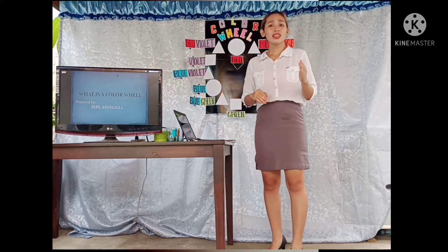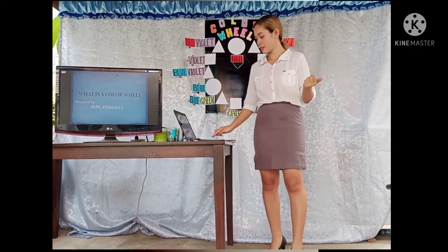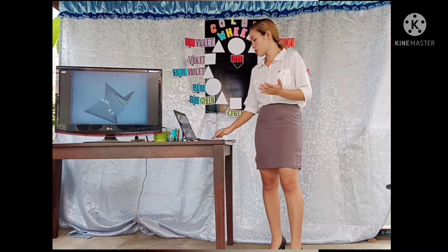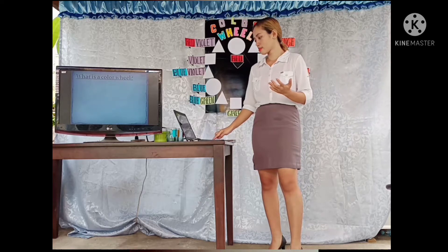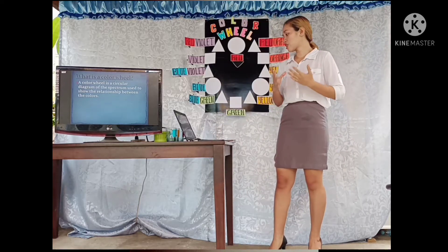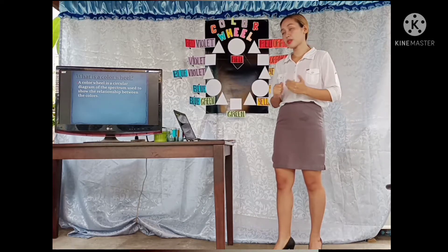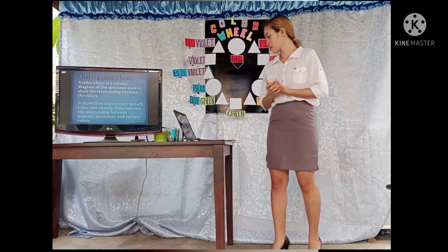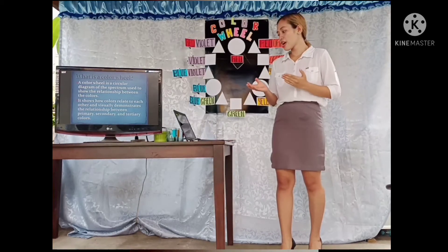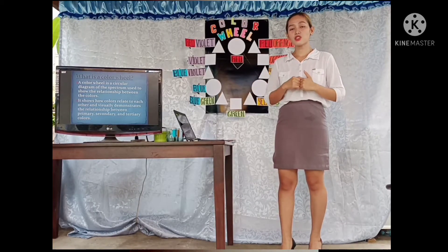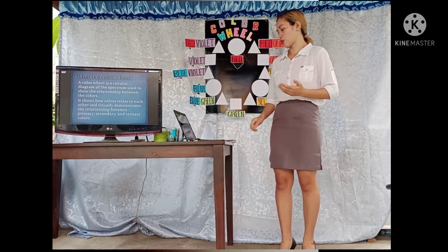What is a color wheel? Any idea? So, a color wheel is a circular diagram of the spectrum used to show the relationship between the colors. It shows how colors relate to each other and visually demonstrates the relationship between primary, secondary, and tertiary colors.